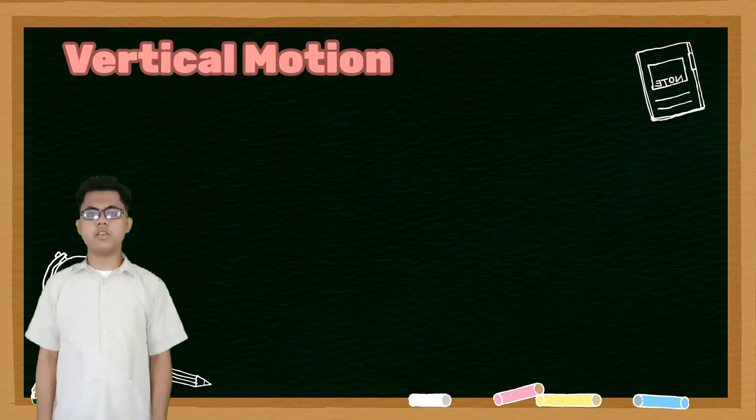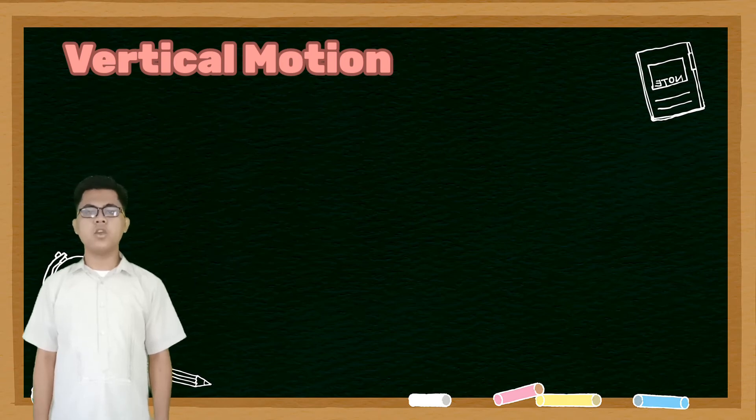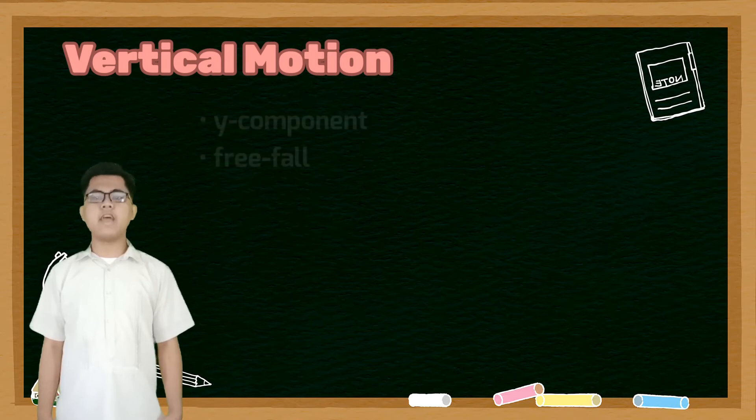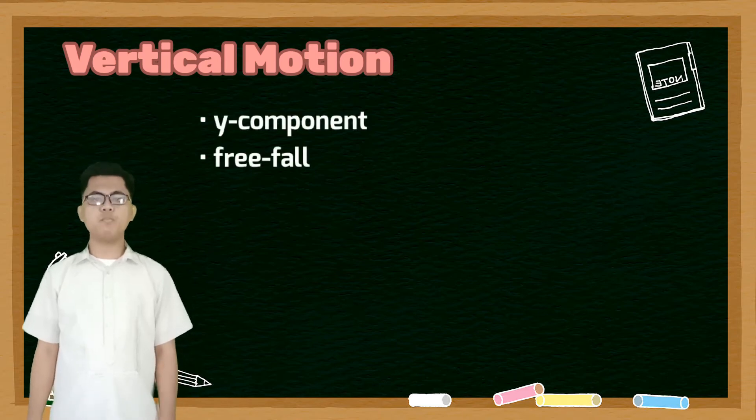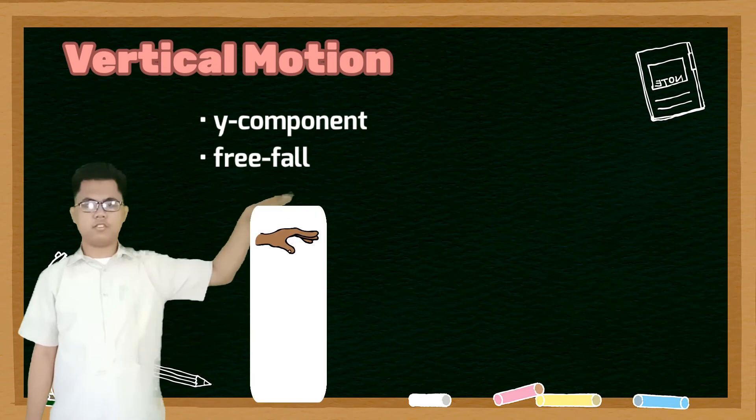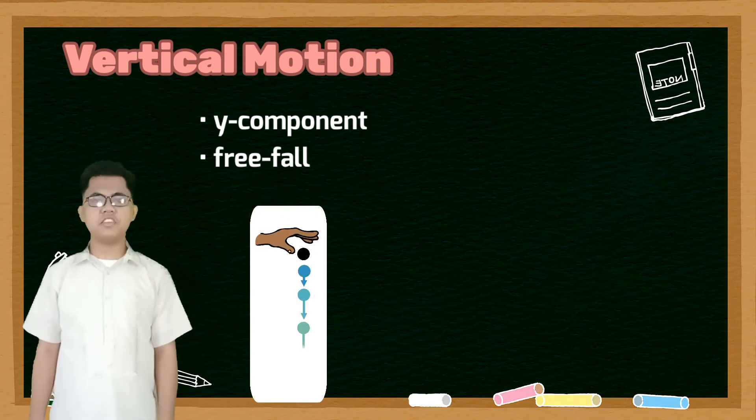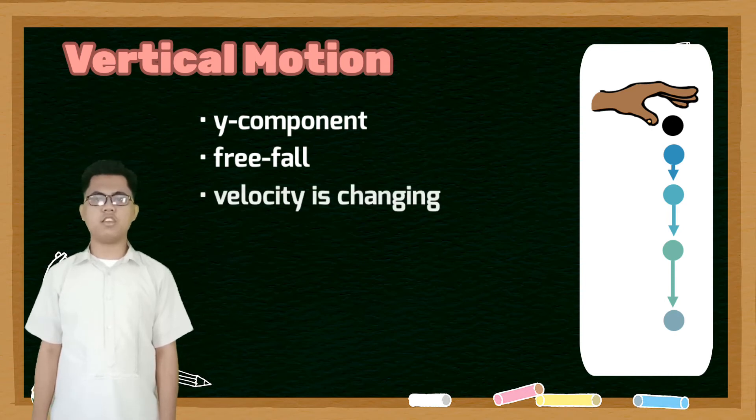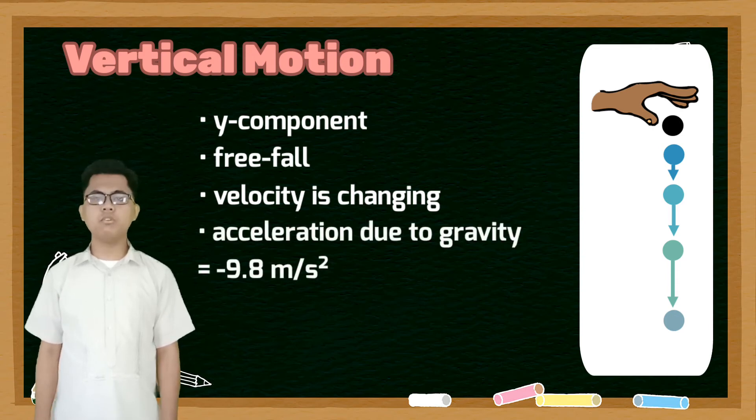After describing the horizontal motion of a projectile, we can now describe its vertical motion. The vertical motion of a projectile can be described as a free fall. Suppose we drop a ball at rest. You will see in this diagram that the ball is gaining speed before it hits the ground. And therefore, its velocity is changing. And the ball is accelerating downward due to gravity.